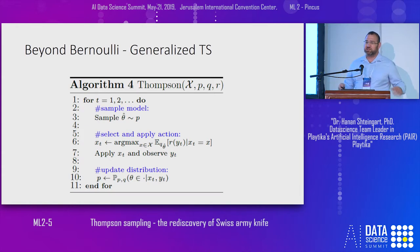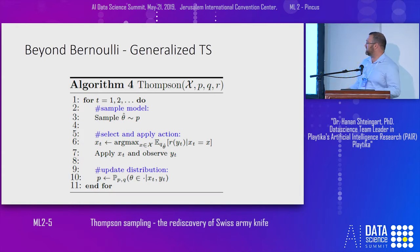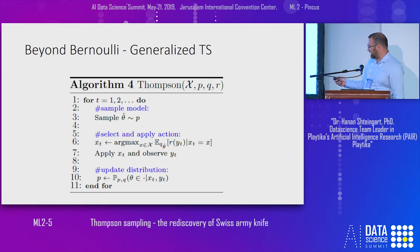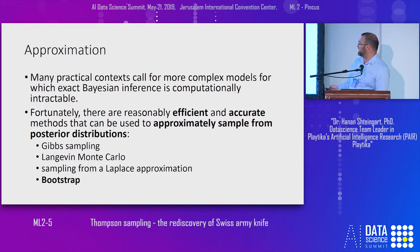Thompson Sampling can be generalized much beyond a slot machine with a Bernoulli probability to win — it can be generalized to every distribution of a scalar reward. I will not go into it here, but you have it in the slides which you can download from my GitHub account.